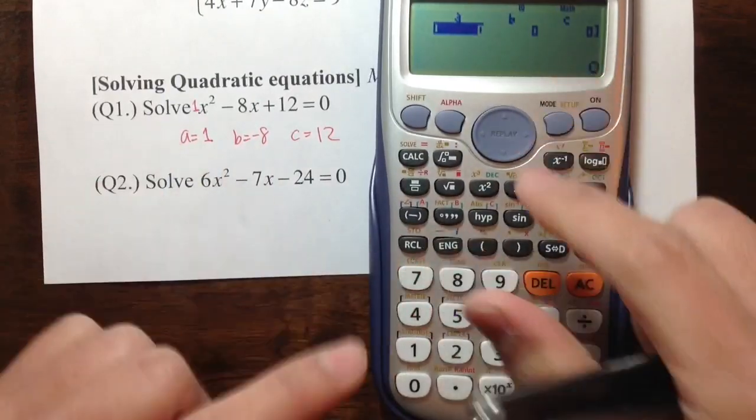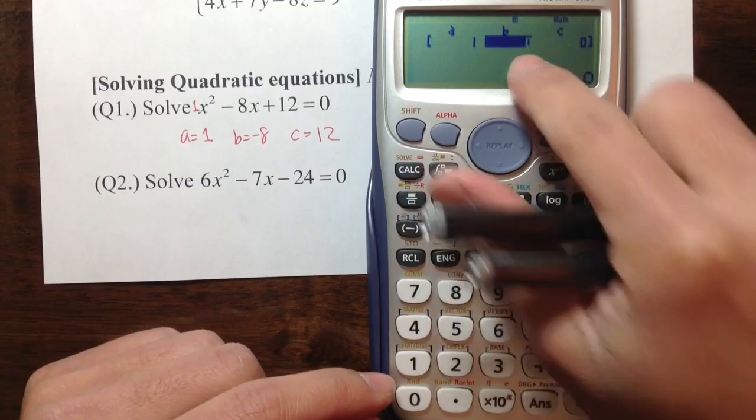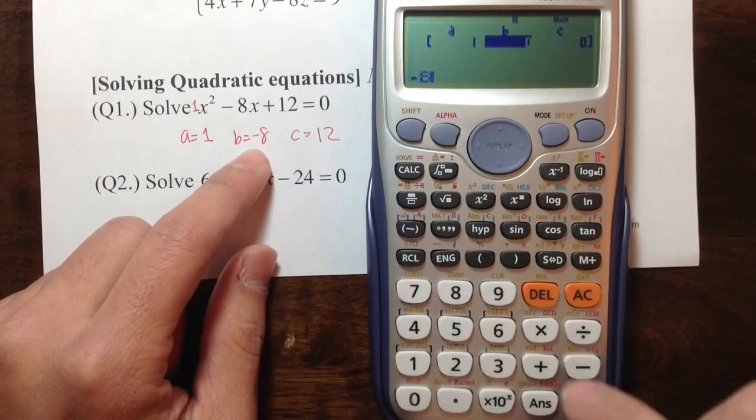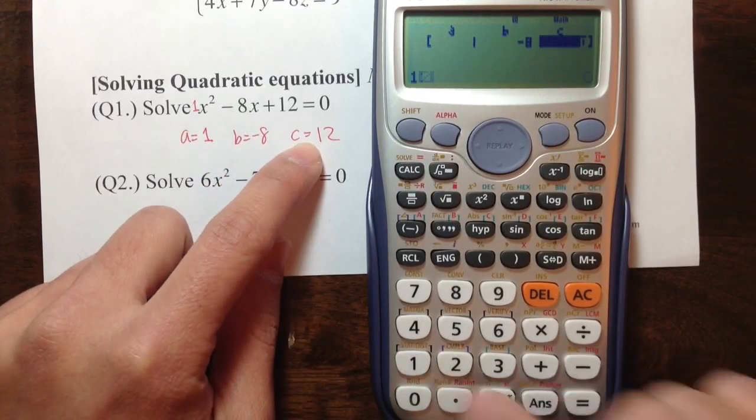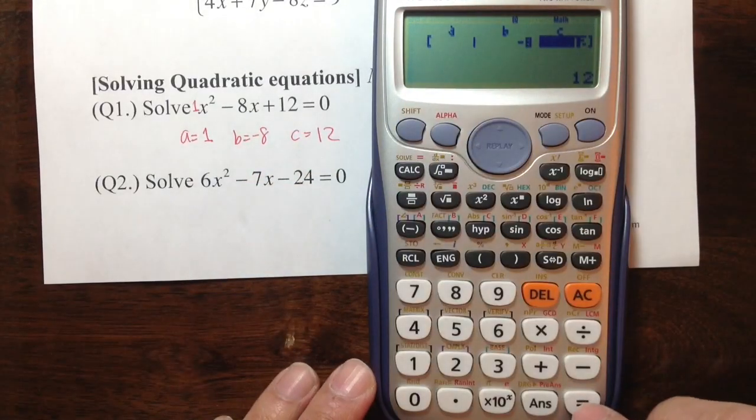We just need to enter these numbers in this order. I have 1, equals, the second one I have -8, -8 equals, the third one of 12, equals. Enter all this.